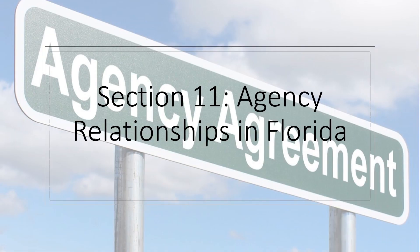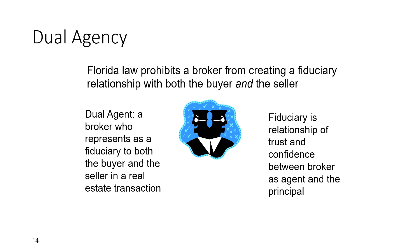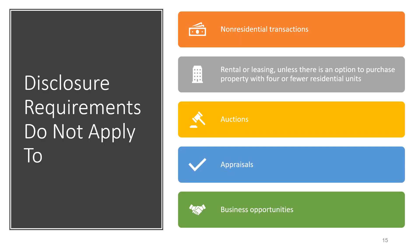Section 11: Agency Relationships in Florida. When people delegate authority to another to act on their behalf, an agency relationship is created. There are two types of law: common law and statutory law. Florida law prohibits a broker from creating a fiduciary relationship with both the buyer and the seller. A dual agent is defined as a broker who represents as a fiduciary both the buyer and the seller in a real estate transaction. A fiduciary is defined as a relationship of trust and confidence between the broker as the agent and the principal. Disclosure requirements do not apply to non-residential transactions, renting or leasing unless there's an option to purchase, property with four or fewer residential units, auctions, appraisals, and business opportunities.